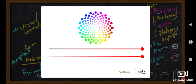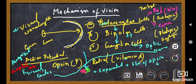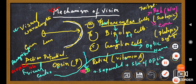The visual cortex is responsible for the analysis of the signals sent from the retina. The visual cortex is located in the occipital lobe of the brain. This is how the mechanism of vision works. That's it for today.